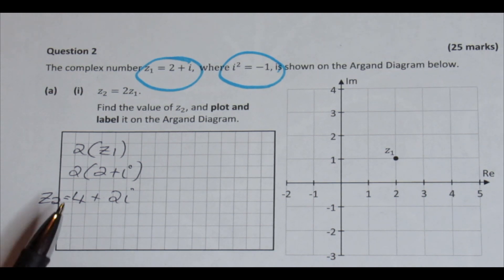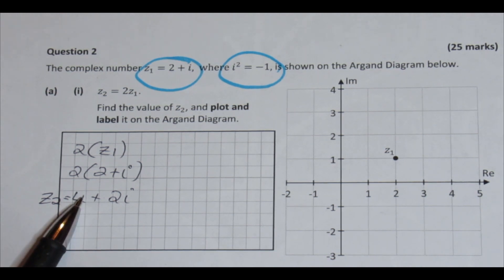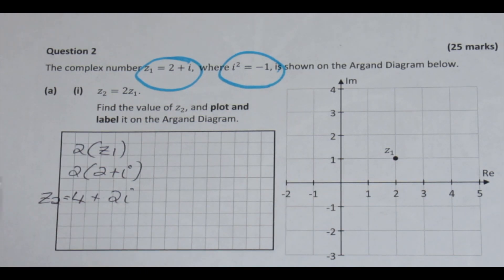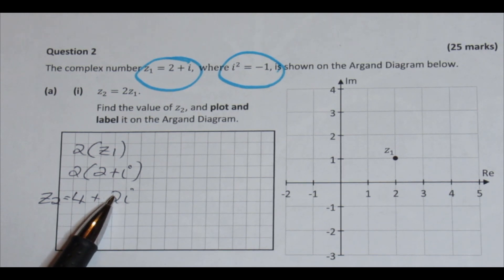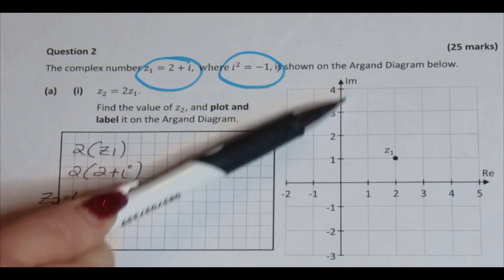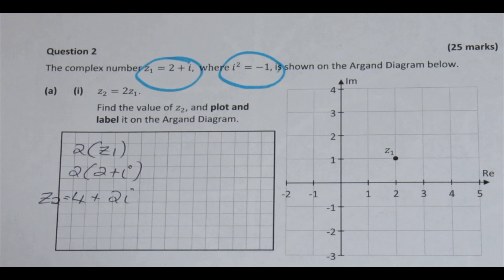Now they're very relatable because you can see the real number always is written first. The x is always done first. The second part, the imaginary part, is always written second when we write down a complex number. And the y-axis is always the second one we look to when we're drawing a point. So they are relatable there. What you do is you go four on the real and up two on the imaginary. So your Z2 is there. So that is part I of that question.